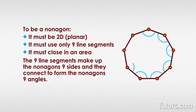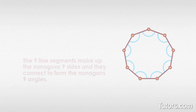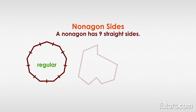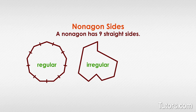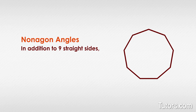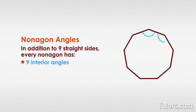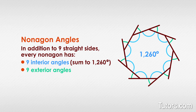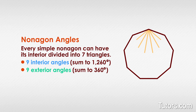A nonagon has nine straight sides. If the sides are all the same length, you have a regular nonagon. If the sides vary in length, you have an irregular nonagon. If the sides are curved, it's not a nonagon. In addition to nine straight sides, every nonagon has nine interior angles that sum to 1260 degrees and nine exterior angles that sum to 360 degrees.